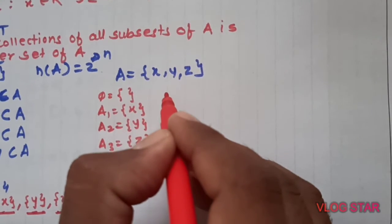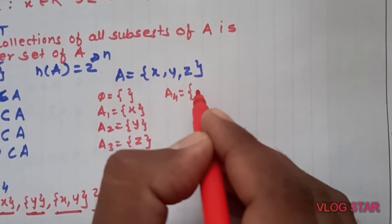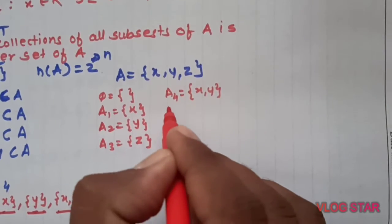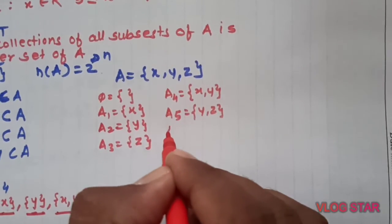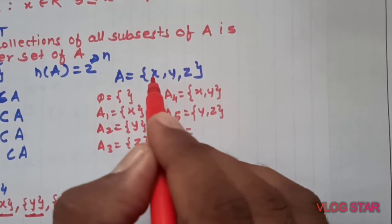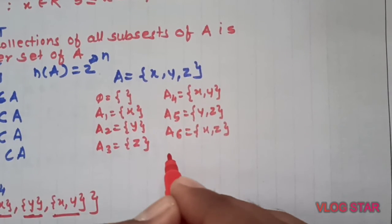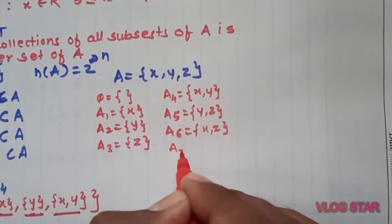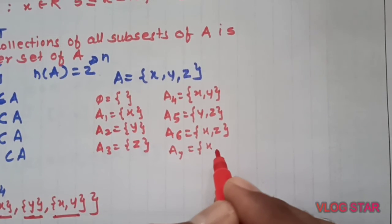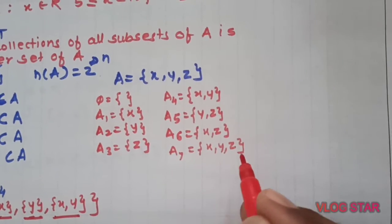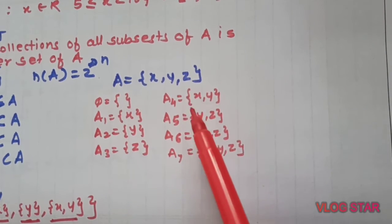Now we will take two member sets. A4, two members, x and y. A5, we will take two elements at a time, y and z. In all, how many sets are here? Empty set 1, 2, 3, 4, 5, 6, 7, 8.